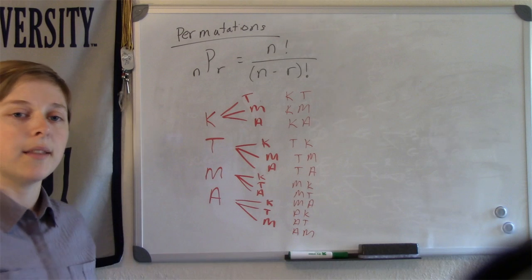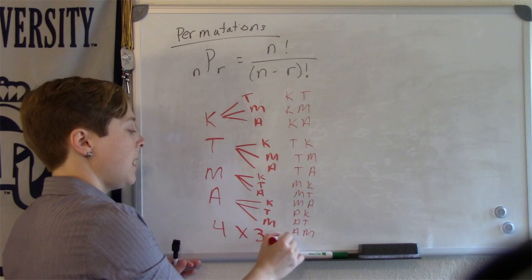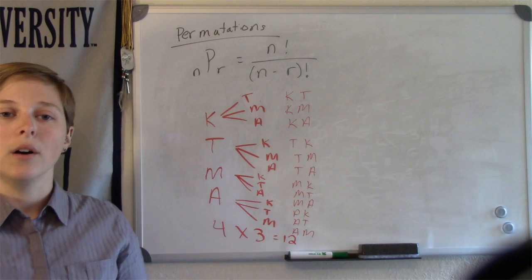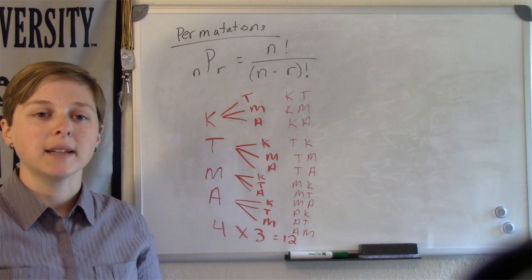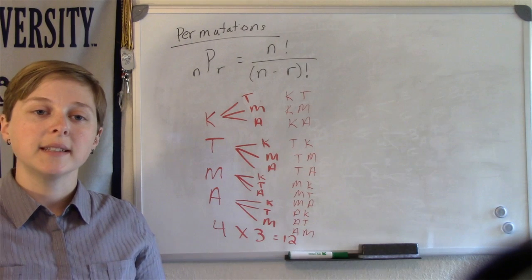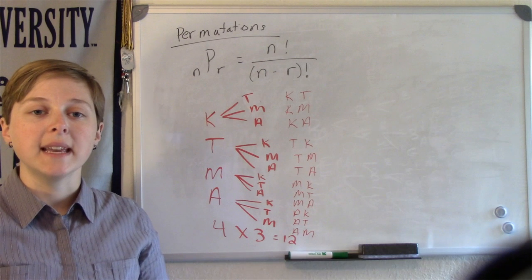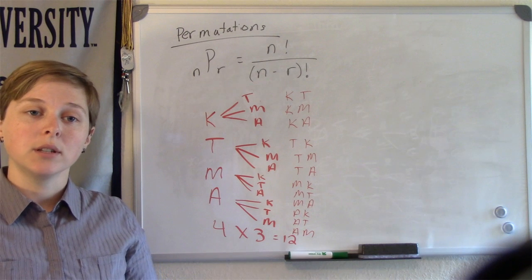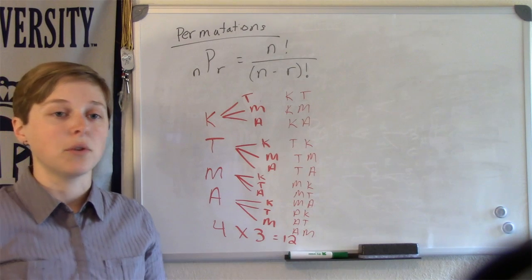Notice there are four times three equals twelve different possibilities. Here, the number of distinct objects or the number of distinct friends, n equals four, where we are taking two at a time, so r equals two. We could have solved this problem using the permutation formula.